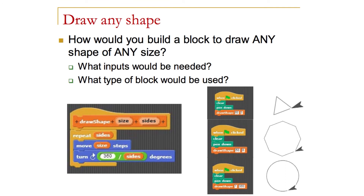The 'draw any shape' block is much more abstract and generalized than the previous. We removed fixed numbers — instead of a hard-coded four for a square, we use 'sides', and instead of a fixed pixel length, we use 'size'. The turn angle is computed as 360 divided by the number of sides. This allows drawing a triangle, an octagon, or even a circle — the circle case uses 360 sides with a one-pixel side length, producing an approximation of a circle by repeating 360 times.